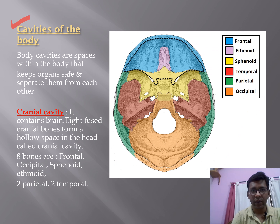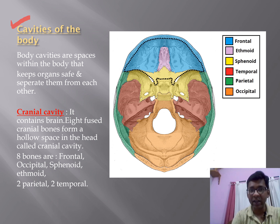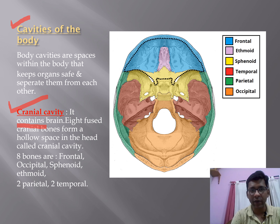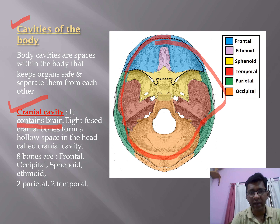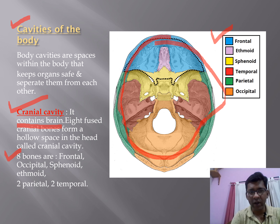Body cavities are spaces within the body that keep organs safe and separate from each other, preventing collision between vital organs. The first is the cranial cavity, which contains the brain. Eight fused cranial bones form a hollow space in the head called the cranial cavity. These eight bones are the frontal, occipital, sphenoid, ethmoid, two parietal, and two temporal bones, all making up the cranial cavity.